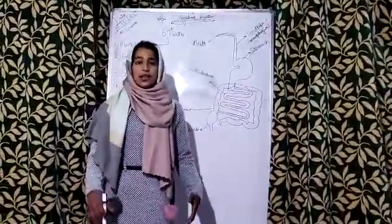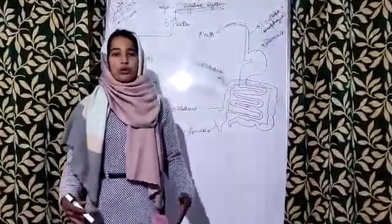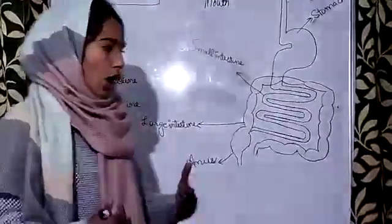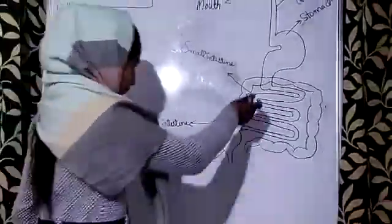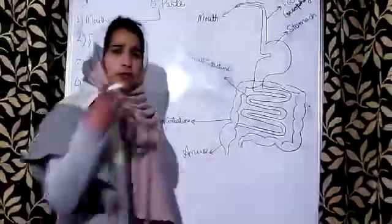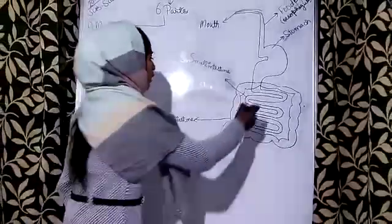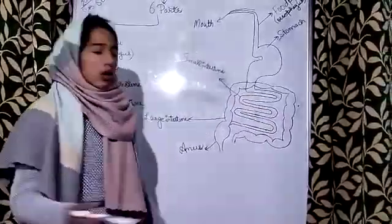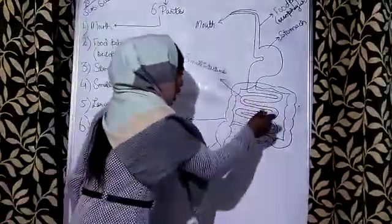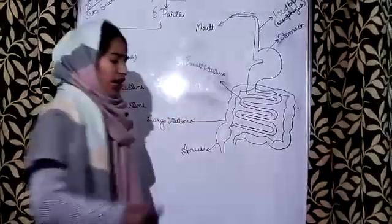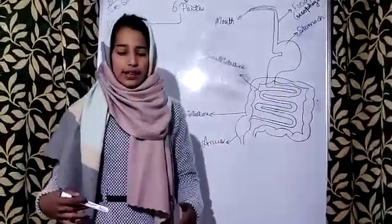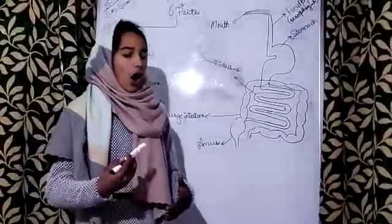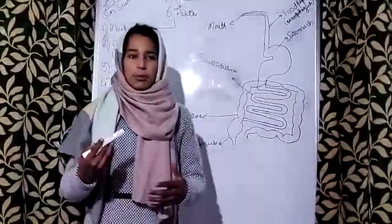In the small intestine, the food is finally broken down into nutrients and those nutrients are absorbed from the food. The waste material or undigested food then goes into the large intestine.